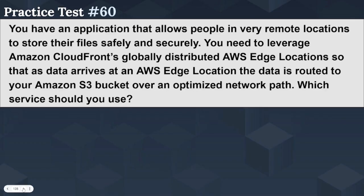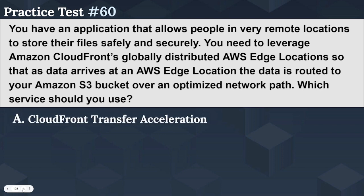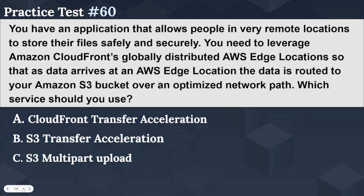The next question is: you have an application that allows people in very remote locations to store their files safely and securely. You need to leverage Amazon CloudFront's globally distributed AWS edge locations so that as data arrives at an AWS edge location, the data is routed to your Amazon S3 bucket over an optimized network path. Which service should you use? Option A: CloudFront transfer acceleration. Option B: S3 transfer acceleration. Option C: S3 multipart upload. Option D: CloudFront multipart upload.